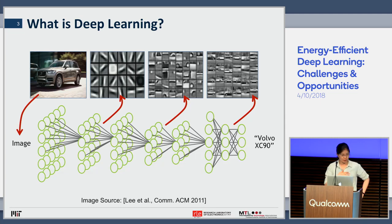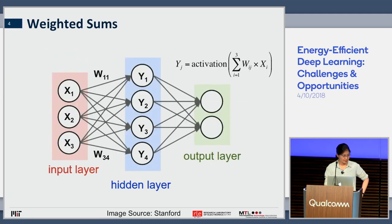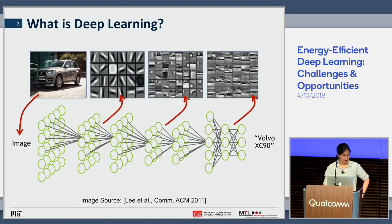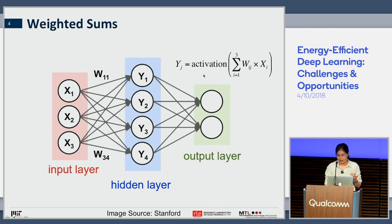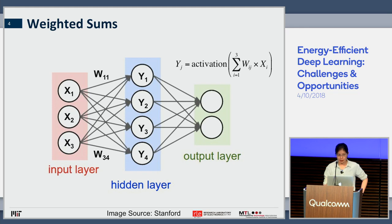What makes deep learning stand out is that the weights used to apply computation on images are actually learned from the data itself. Historically, before the rise of deep learning in 2012, an expert in computer vision would manually specify what features are important. Now you can discover these features through the data. At each layer, all you're doing is a weighted sum — you have a bunch of inputs, multiply by weights, do a weighted sum, then pass through a non-linear activation function to represent a more diverse set of functions, and repeat. During training, you're learning those weights based on data.